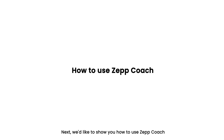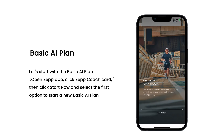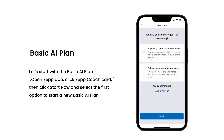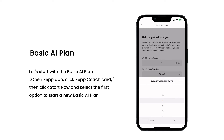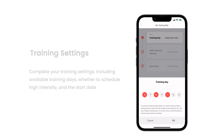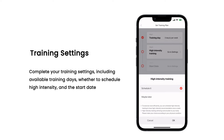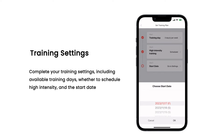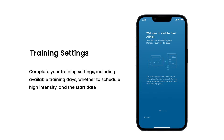Next, we'd like to show you how to use ZepCoach. Let's start with the basic AI plan. Click Start Now and select the first option to start a new basic AI plan. Fill in your exercise habits and complete your training settings, including available training days, whether to schedule high intensity, and the start date.